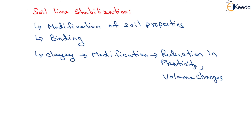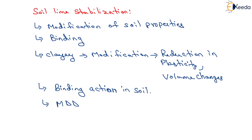Lime also imparts a little binding action in soil. The maximum dry density of soil-lime mix is decreased by 2 to 3 percent compared to untreated soil. However, this decrease in dry density with the addition of a small proportion of lime does not cause reduction in strength — it will increase the bearing capacity of the soil without affecting other properties negatively.